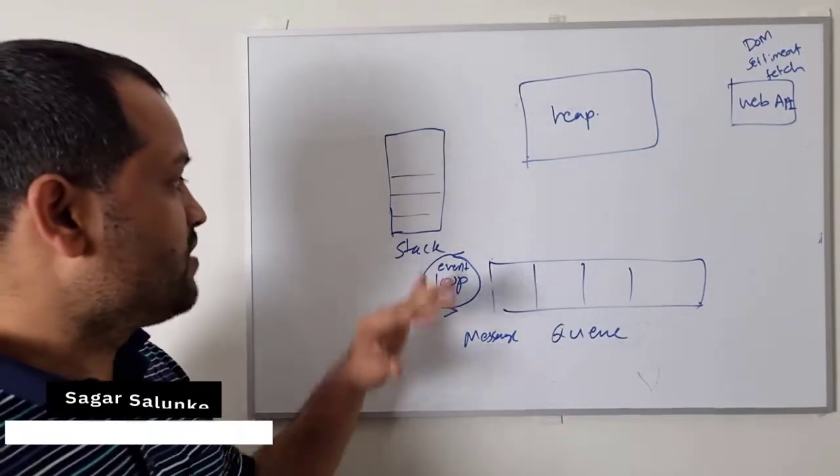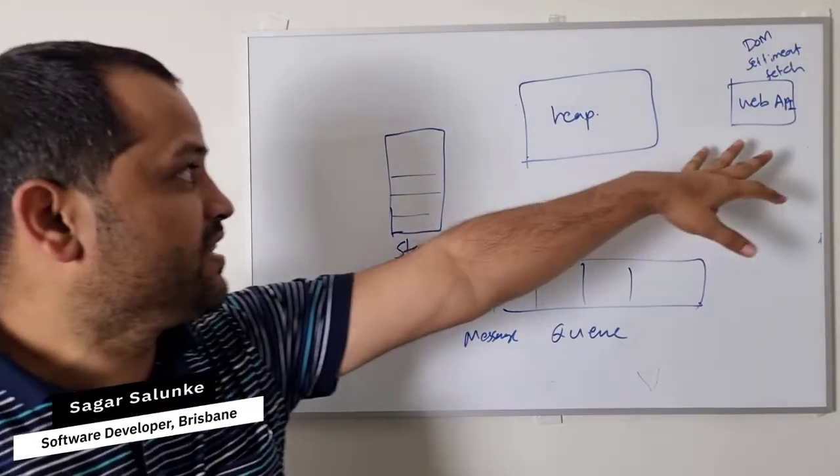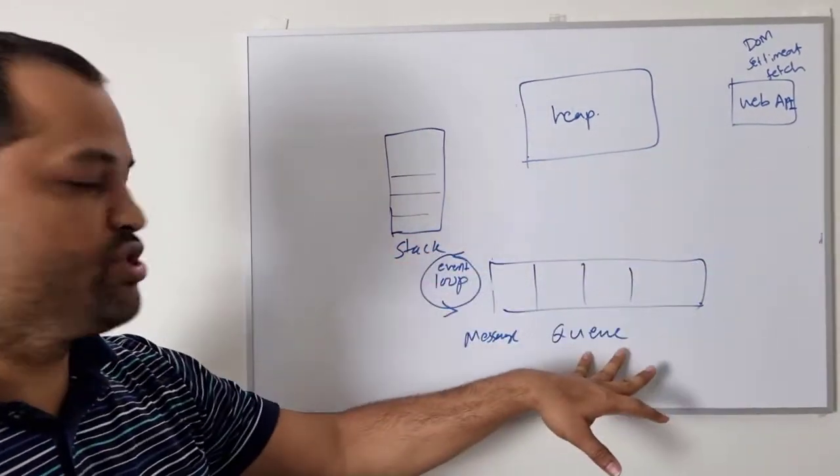In JavaScript Runtime and Environment, we have got the stack, heap, then there is web APIs and then there is a message queue.